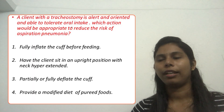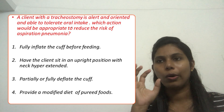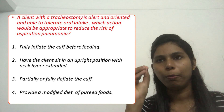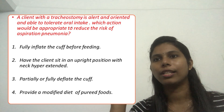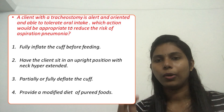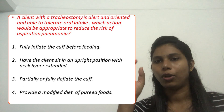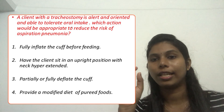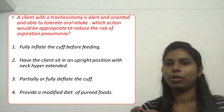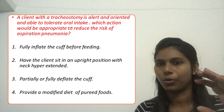A client with a tracheostomy is alert and oriented and able to tolerate oral intake. Which action would be appropriate to reduce the risk of aspiration pneumonia? The question asks what is the correct intervention to reduce the risk of aspiration pneumonia in a client with a tracheostomy who is alert and able to tolerate oral intake.